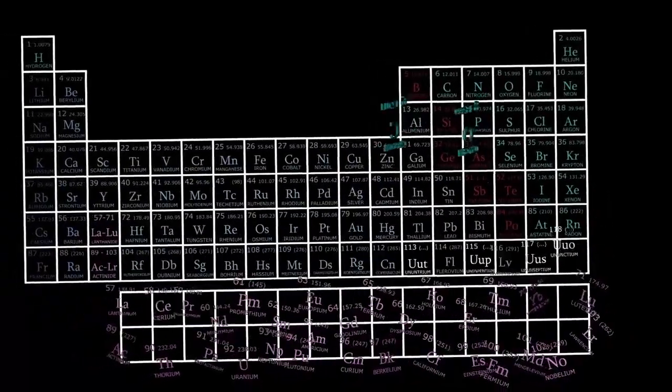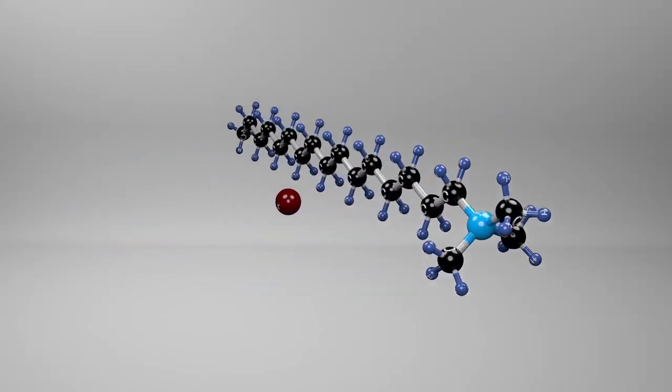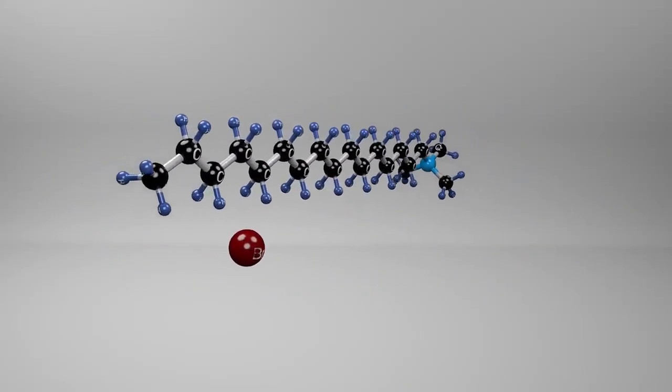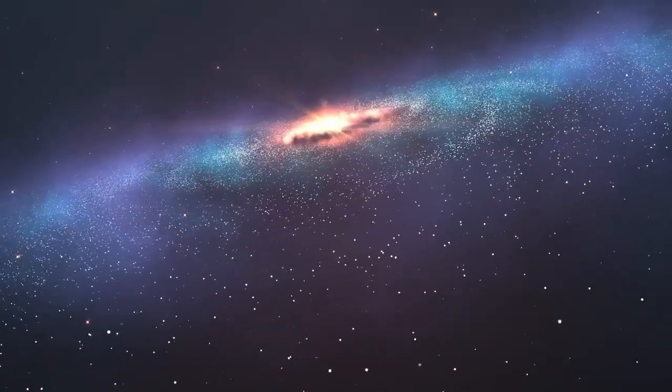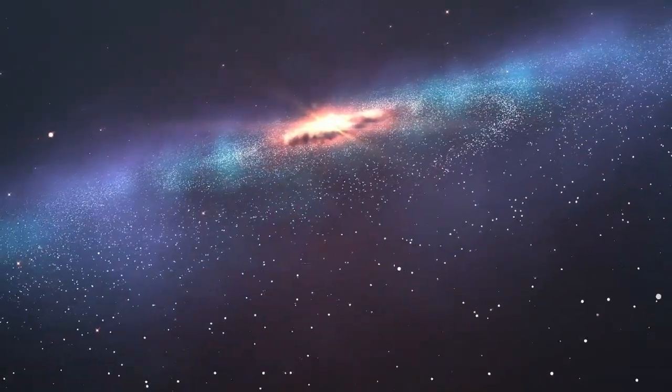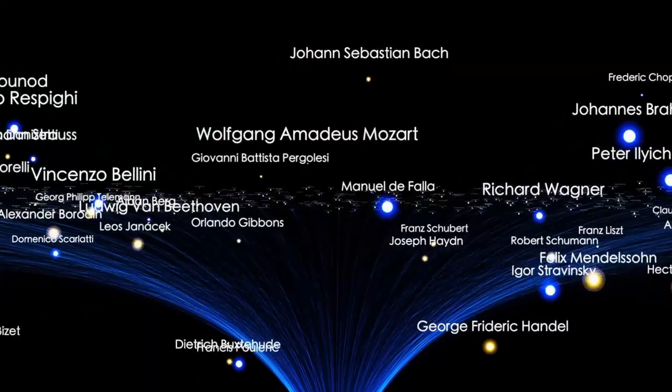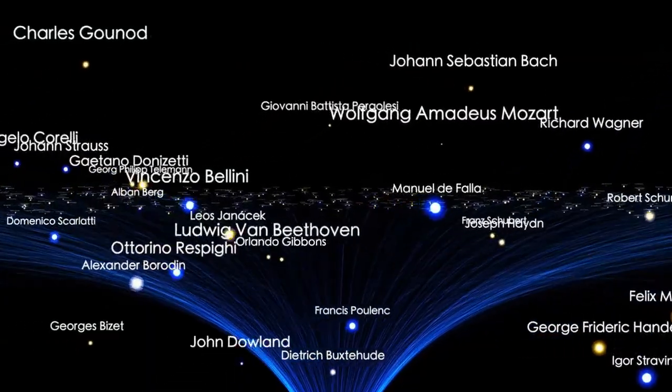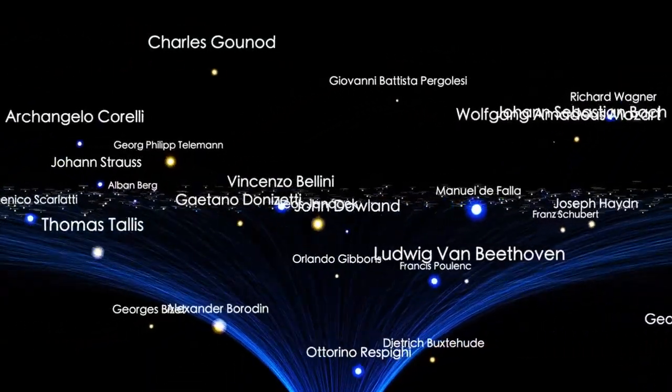That galaxy hadn't just taken shape, it had thrived. The laws of astrophysics didn't allow this. It was like finding a fully grown redwood tree sprouting from freshly planted soil. And it wasn't alone. Webb kept uncovering more. Across vast regions of the sky, multiple galaxies appeared, each showing complexity and maturity that shouldn't have been possible. This wasn't a glitch in the telescope. The instruments worked flawlessly. The problem wasn't the data. The problem was our theories.